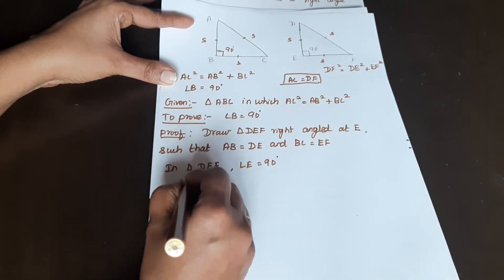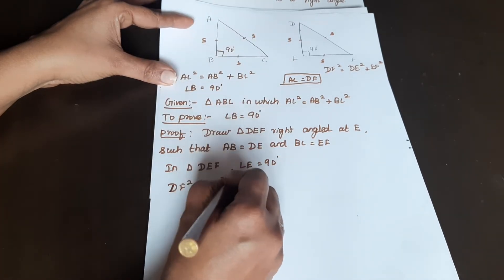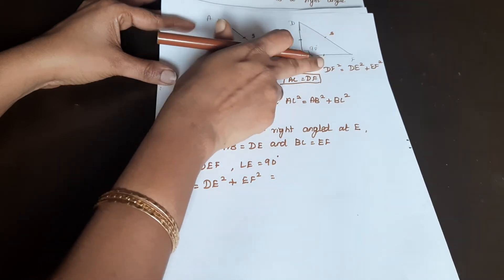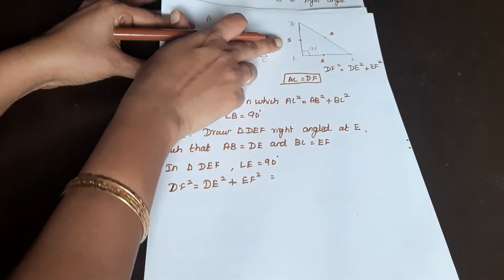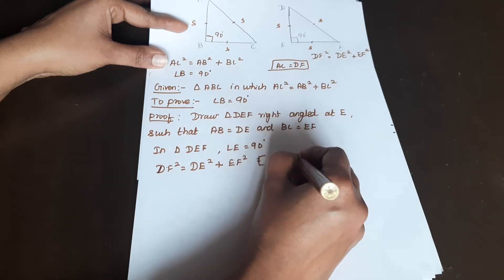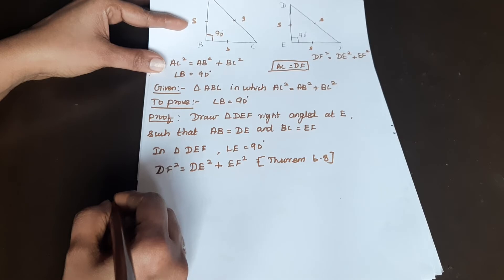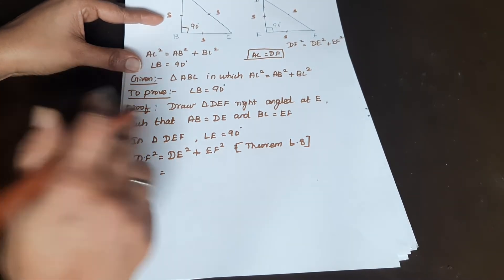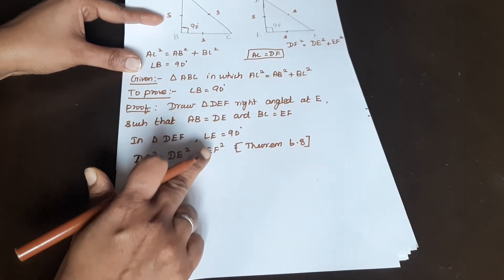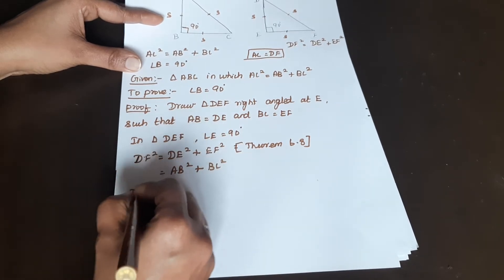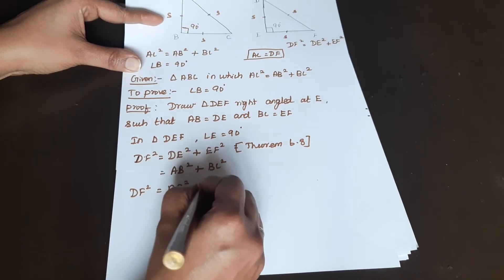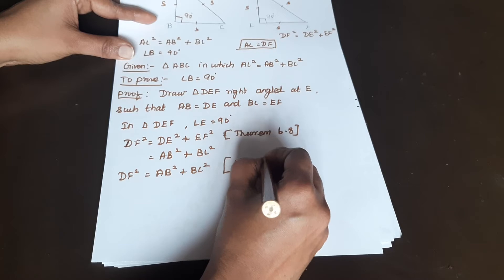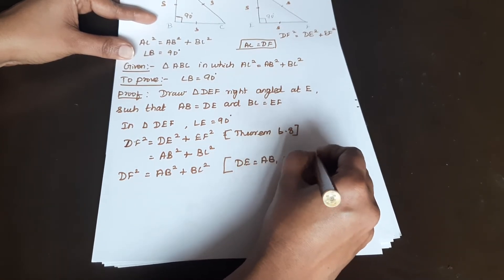Since angle E is 90 degrees in triangle DEF, by theorem 6.8, DF² is equal to DE² plus EF². Theorem 6.8 states that the square of the hypotenuse equals the sum of the squares of the other two sides. So DF² equals DE² plus EF².